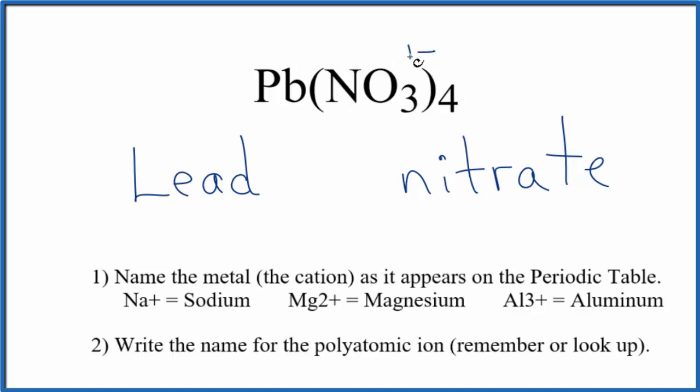So we have 4 times 1 minus, that's 4 minus. The lead has to have an ionic charge of 4 plus for this all to add up to 0, give us a net charge of 0. To show this 4 plus here, we write the Roman numeral 4, put it in parentheses, between the lead and the nitrate.